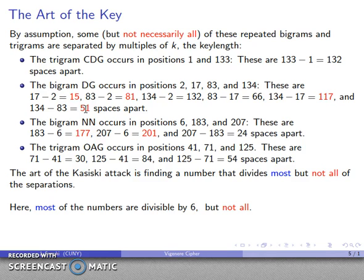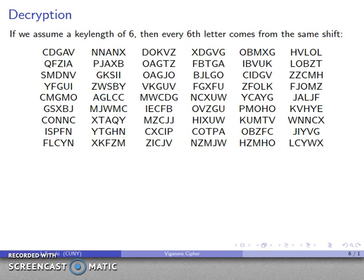We're ignoring these numbers here, which means that these spacings don't actually represent the same pair of letters. They are just coincidentally encrypted in the same way. If I assume a key length of 6, then every 6th letter is going to come from the same shift cipher.